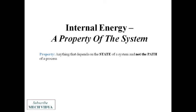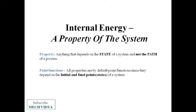Anything that depends on the particular state of a system and not the path of the system is called the property of that system. Then the second concept important here is the point function. All the properties by default are point functions as they depend only on the initial and final points of a system.